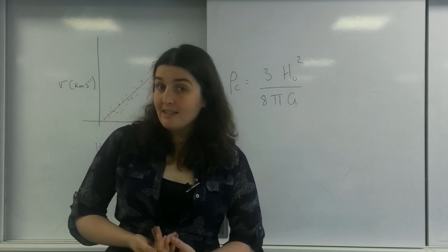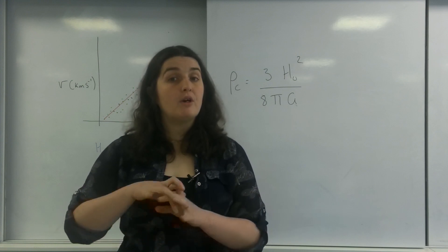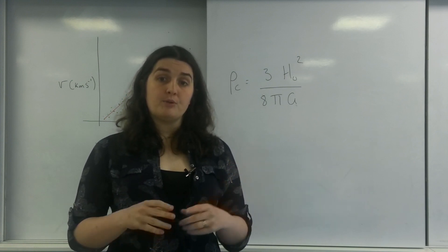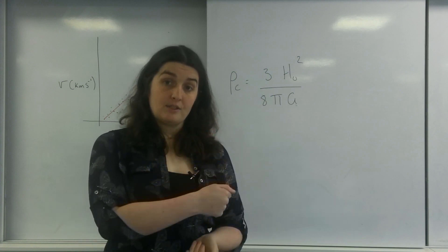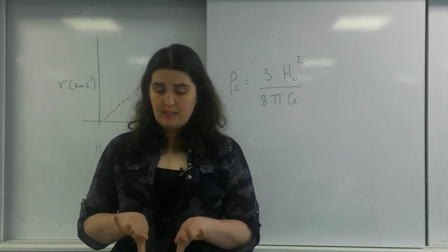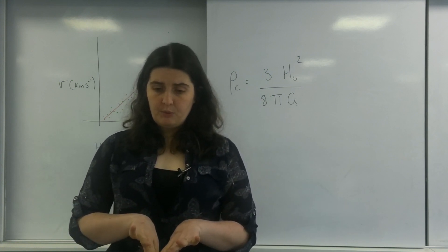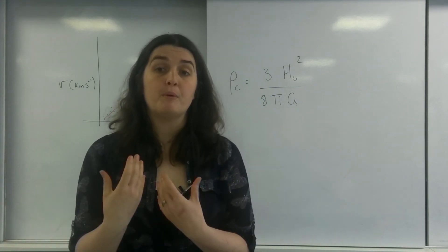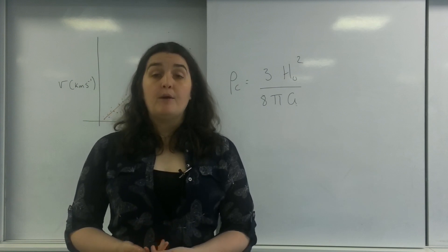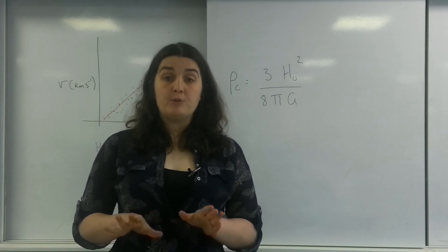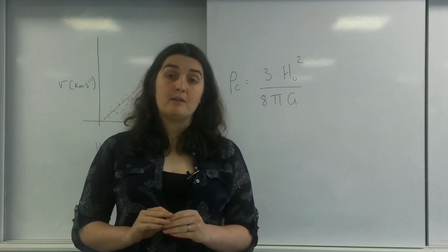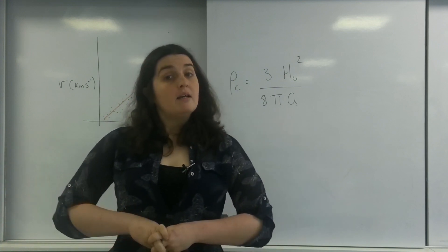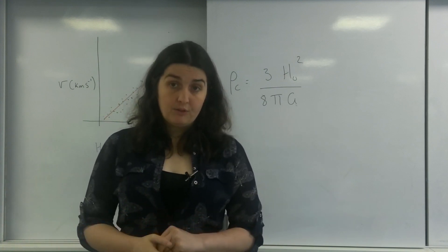If there isn't enough mass — if the density of the universe is less than the critical density — the universe will have more energy than the gravitational pull, so it will just keep going outward, and that's called the Big Freeze. If we are at the critical density, we reach an equilibrium between the energy pushing out from the Big Bang and gravitational force pulling in, giving a static universe.